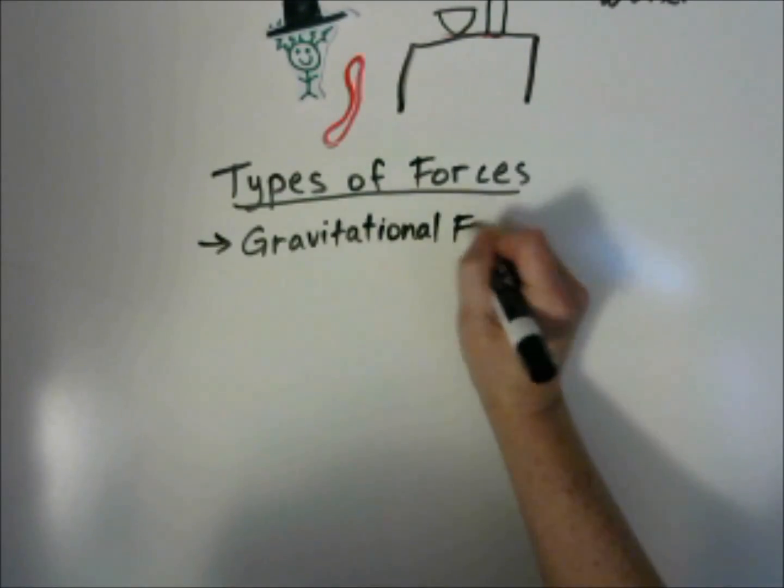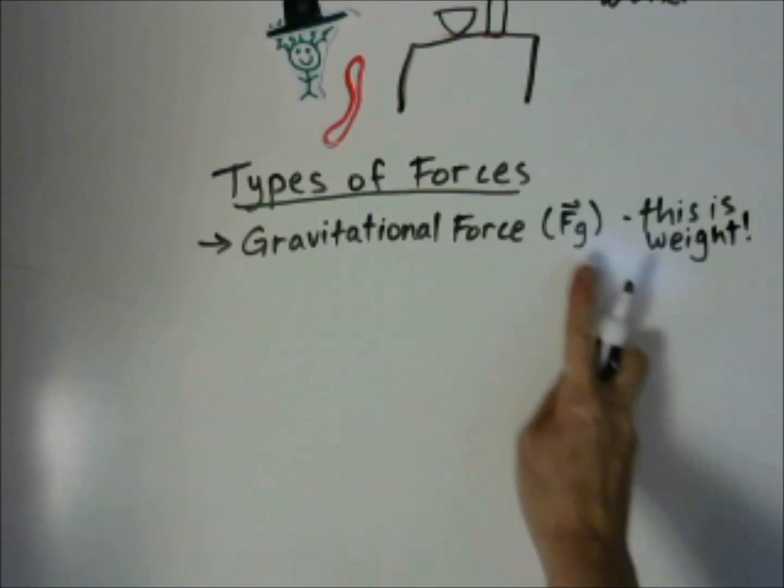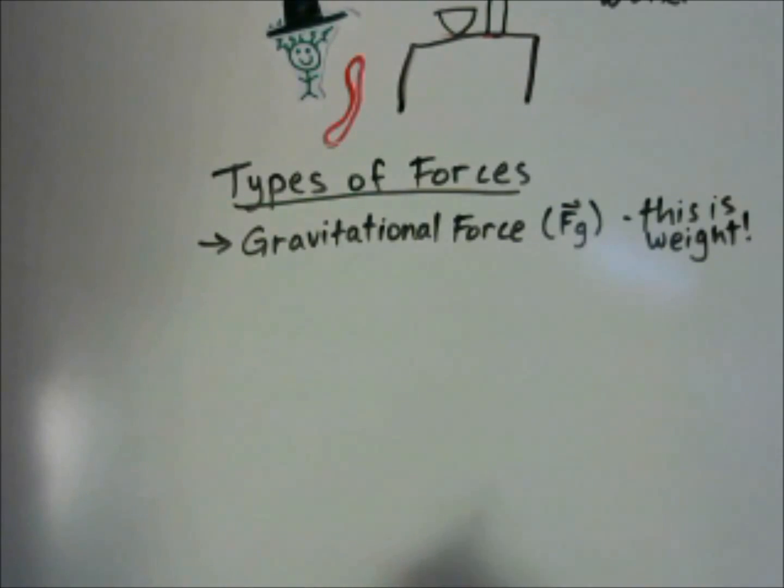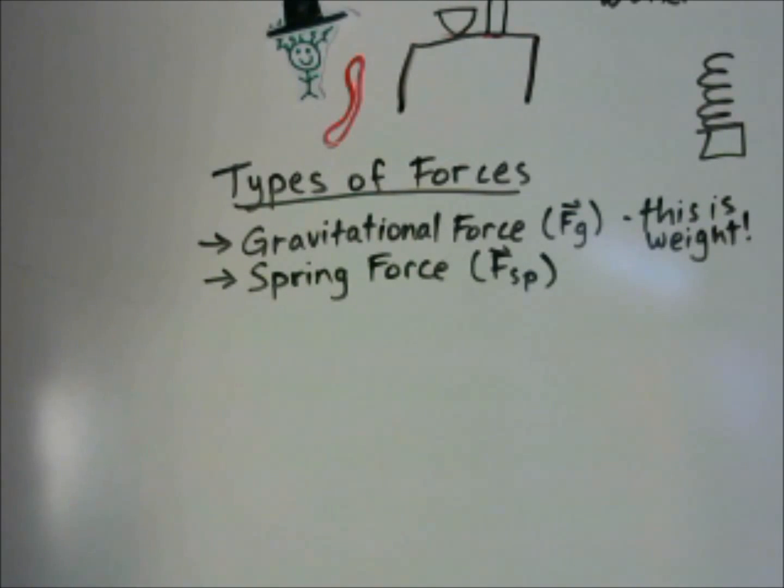What types of forces are there? We have a gravitational force, and we write it as capital F with a vector arrow on top, and then a subscript of G, F sub G. This is the same as weight. We also have a spring force. If an object is hanging from a spring, the spring force is what pulls it towards the spring, and that's written as F sub SP.